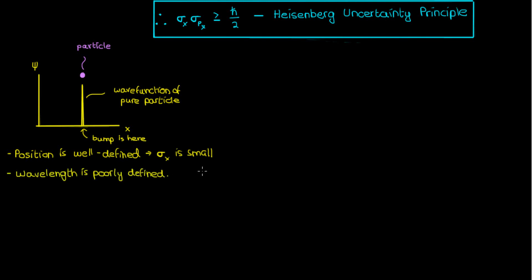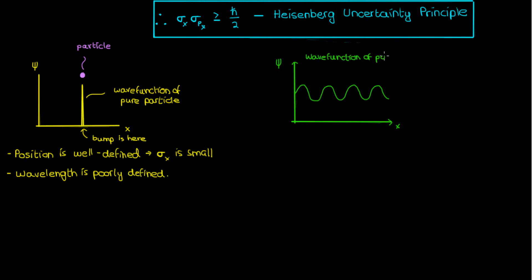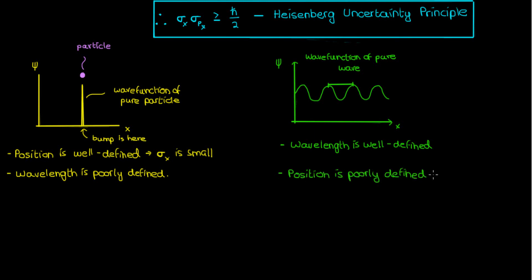However, if you were to ask me the wavelength of this particle — the wavelength of the bump — I can't really give you an answer because the wavelength is very poorly defined; there are no waves to look at. But what if I have a pure wave given by this wave function? In that case, if you ask me the wavelength, I can easily provide an answer just by using the distance between two peaks, so the wavelength is very well defined. However, if you were to ask me the position of this wave, I can't really give you an answer because the position is very poorly defined — the wave is just everywhere, not in one particular location, so the uncertainty on position is large.